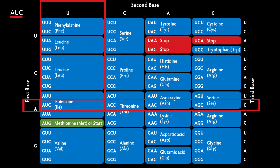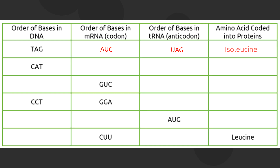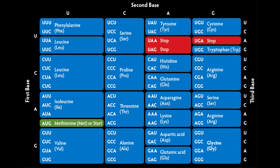The next one is C-A-T. The mRNA codon is G-U-A, and the tRNA anticodon is C-A-U. By looking at the genetic code table, the answer for the amino acid is valine.